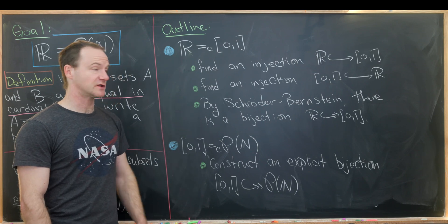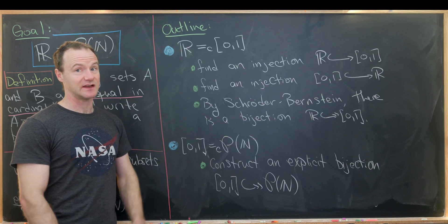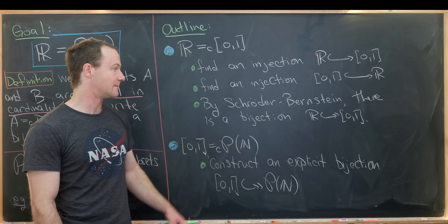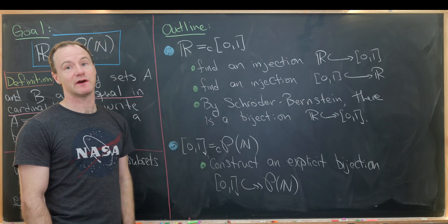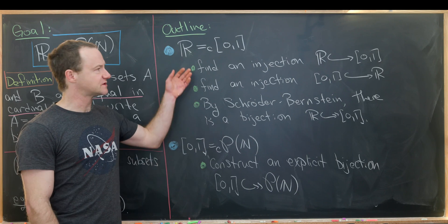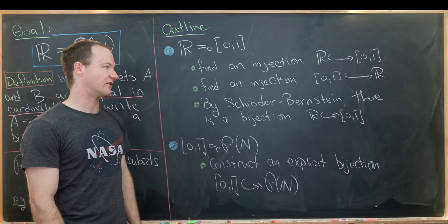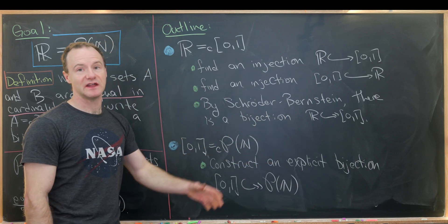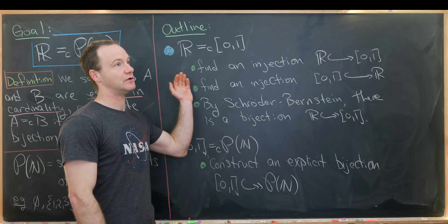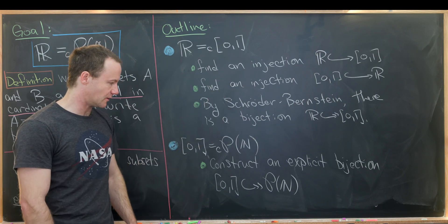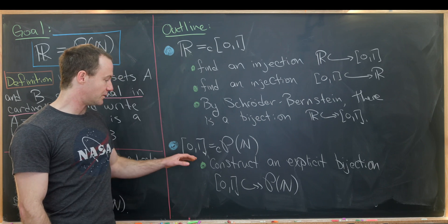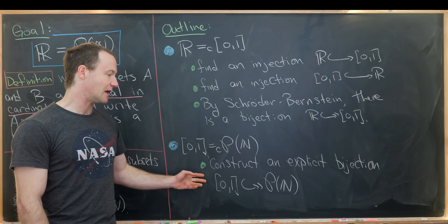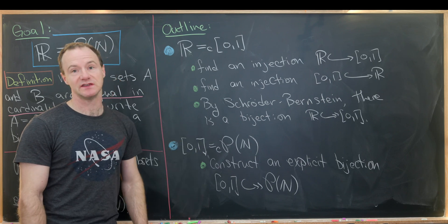Then we can use the Schroeder-Bernstein theorem — which is actually highly non-trivial to prove — and that says there's a bijection from the real numbers to the closed interval [0,1]: if you've got injections in both directions, then you have a bijection. It also says that if you have surjections in both directions, you also have a bijection. Then our second main step will be to show that the closed interval [0,1] is equal in cardinality to the power set of the natural numbers, by constructing an explicit bijection between these two sets.